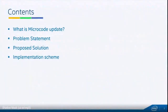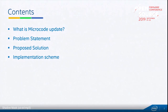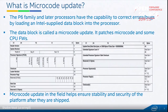We'll be looking at what the microcode update is in general, what it means in a general format. We'll have a look at the problem statement we're trying to solve, then a proposed solution corresponding to the problem, and a general implementation scheme and flow updates.